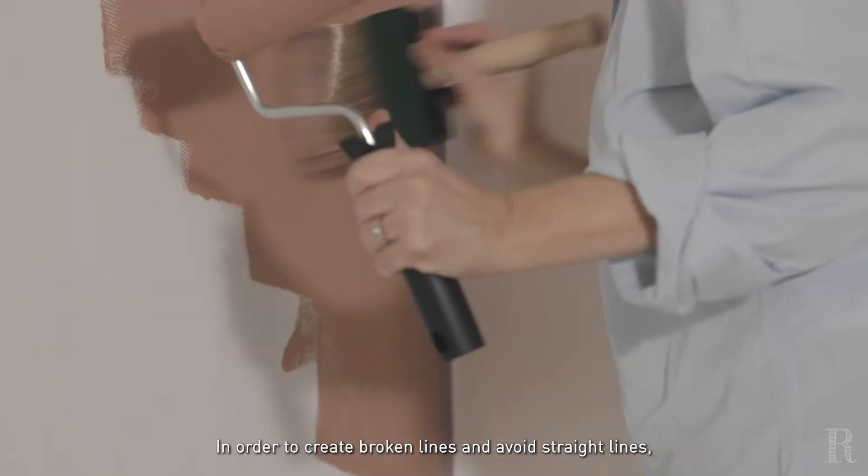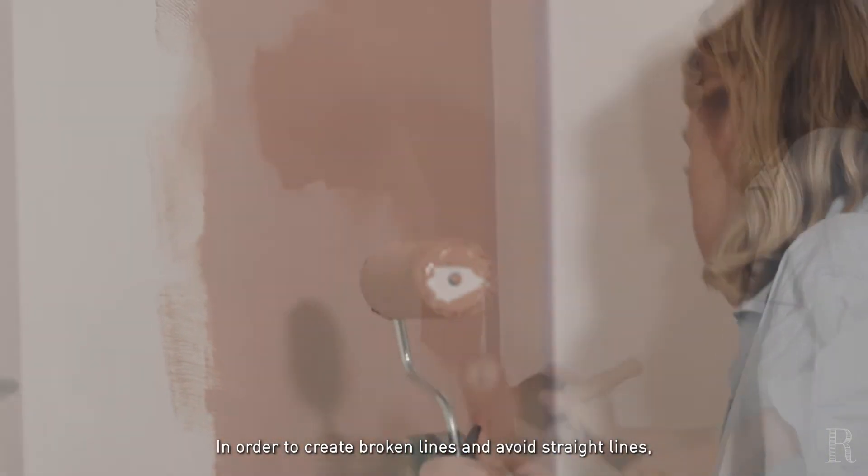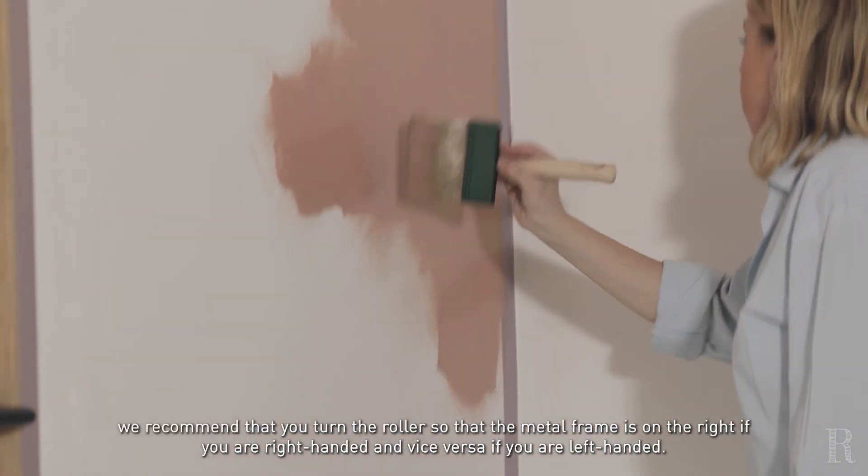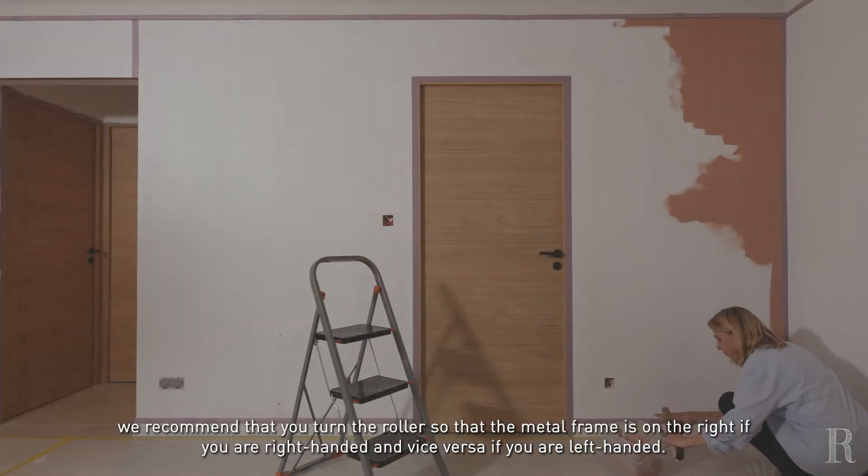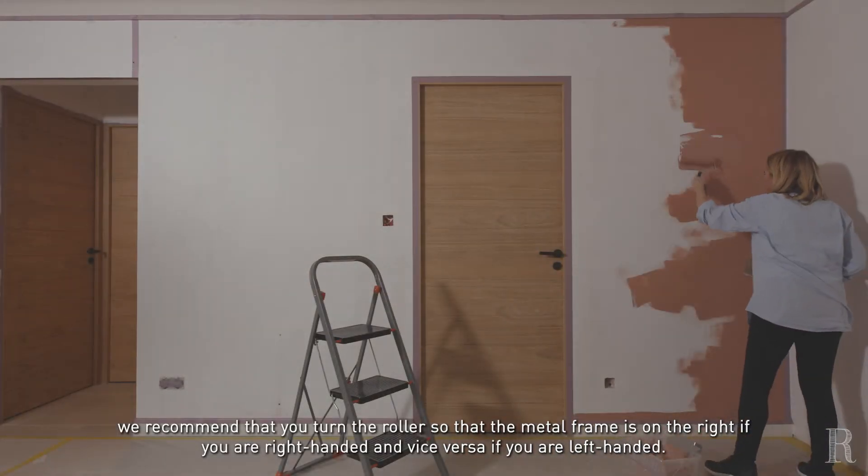Afin de créer des lignes brisées et éviter les lignes droites, tournez le rouleau de manière à avoir la monture en métal à droite si vous êtes droitier et inversement si vous êtes gaucher.